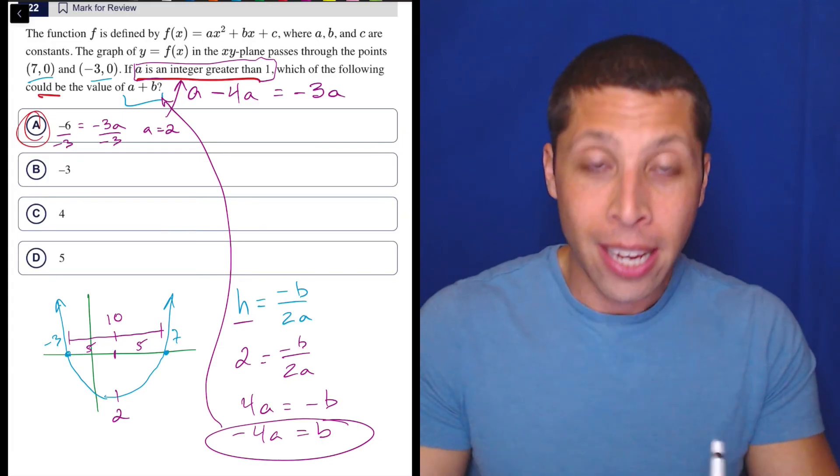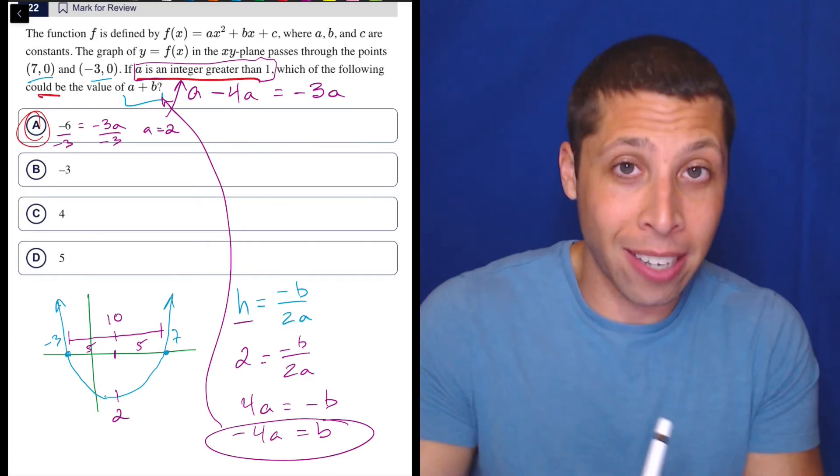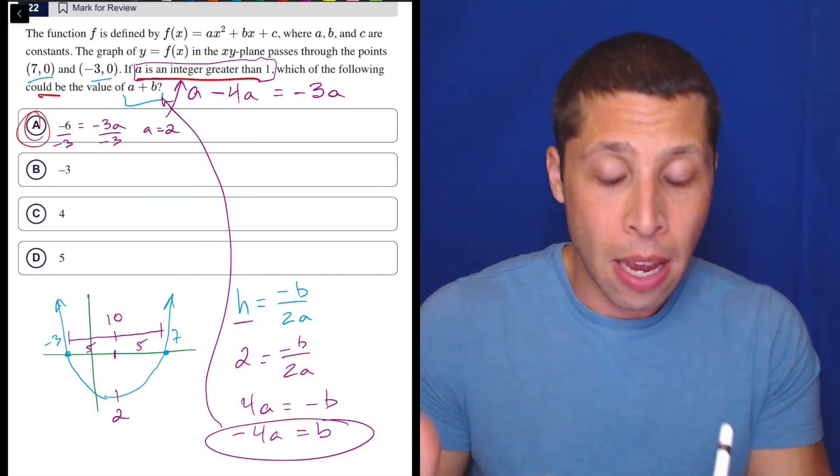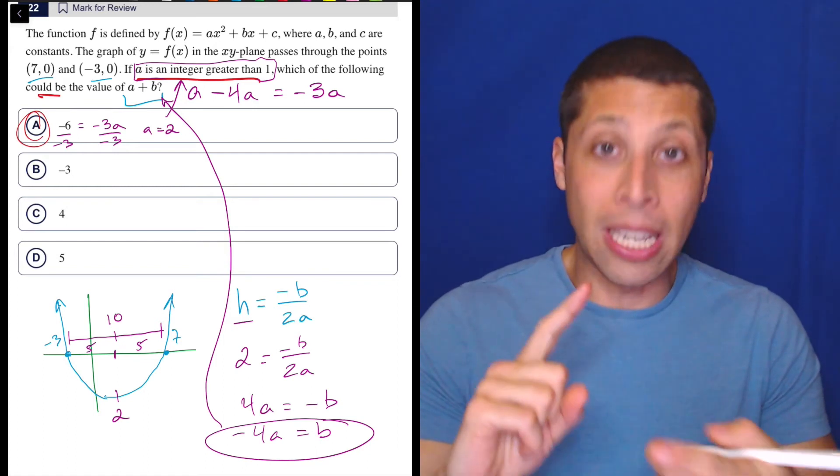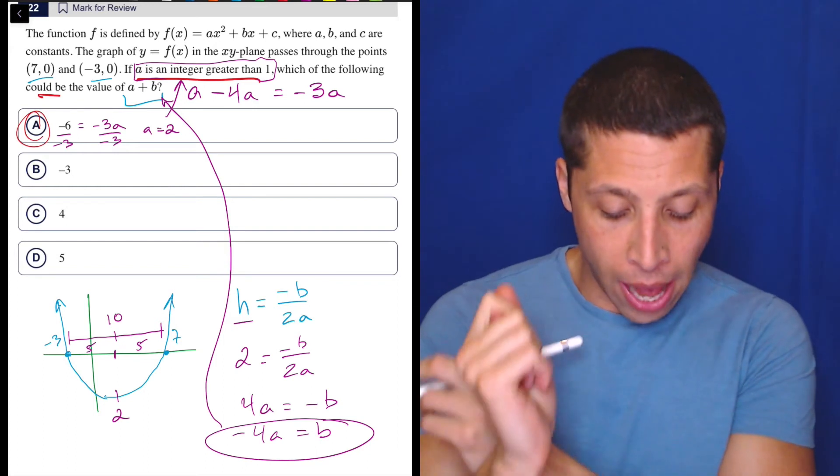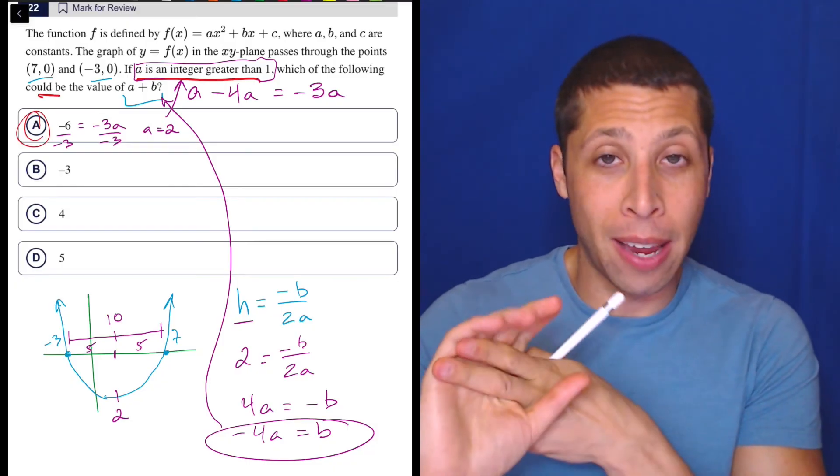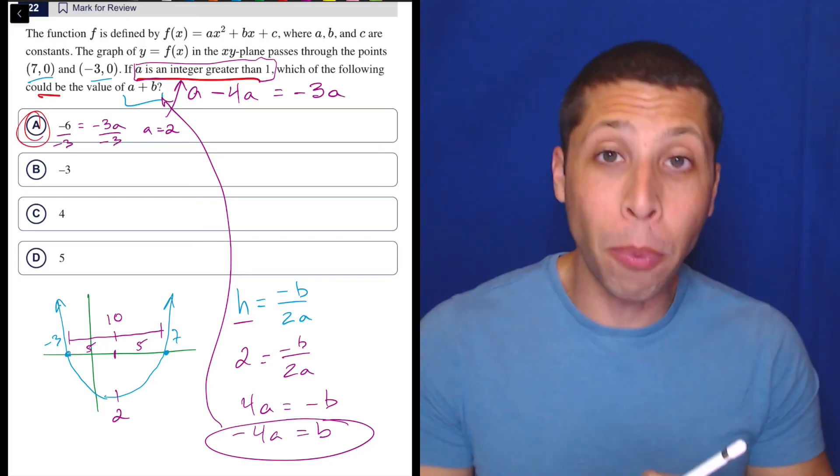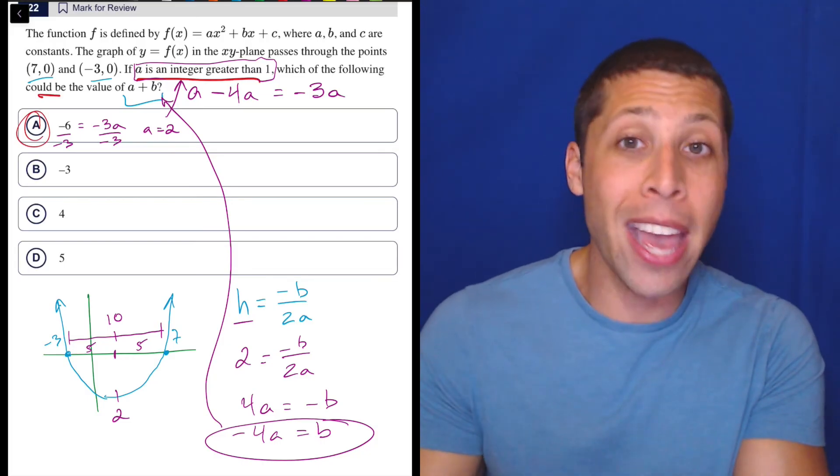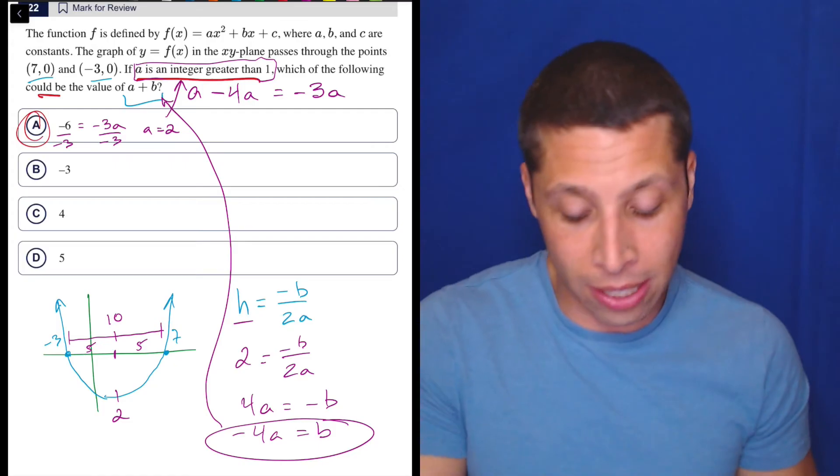And guess what? That satisfies this condition that A is an integer greater than one. Two is an integer greater than one. So basically what we've proven here is that A is a possible value, choice A is a possible value, negative six, because it allows, it meets all of our conditions. It would give us a parabola with a vertex at two. It would give us a set of x-intercepts at negative three and seven, and it would have, it would open upwards, it would have a positive A that's greater than one. So it satisfies those conditions.